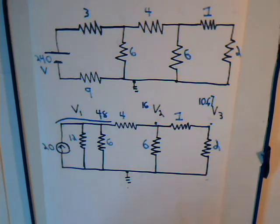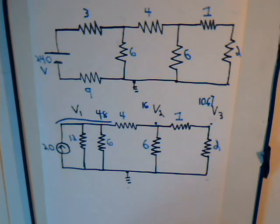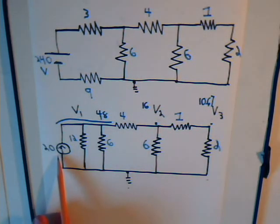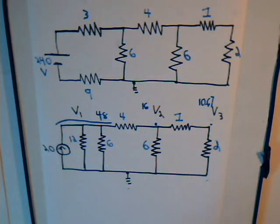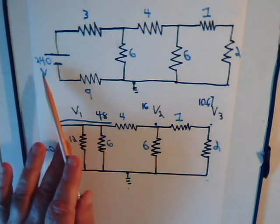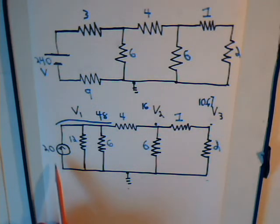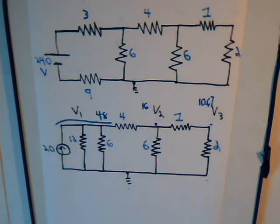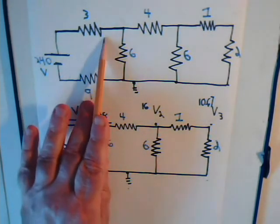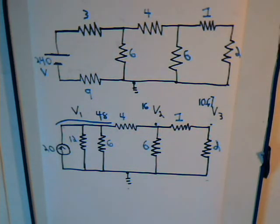We'll determine what the currents are based upon our node technique results and compare the two. We also have to be careful because when we replaced the voltage source with the current source, the magnitude of that current source is the voltage divided by the resistor — 240 divided by 12 — which equals 20 amps. The resistor in parallel with that current source is the sum of those two resistors. We have to think carefully about how we'll determine the currents through those resistors when using the node technique.